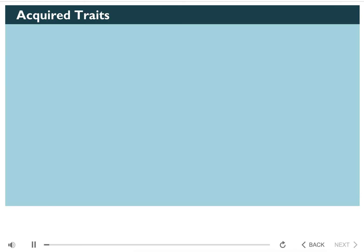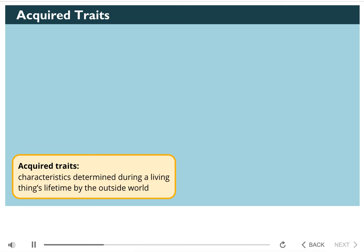We've discussed animal traits that are inherited. Now, let's discuss traits that you might observe in animals that are not inherited — these are called acquired traits. If a trait doesn't come from the animal's parents, where might it come from? Acquired traits are traits that animals pick up during their lifetime. Acquired traits may be caused by the environment, diseases, accidents, predators, or experiences that happen during an organism's life. These types of traits cannot be passed on to their offspring.